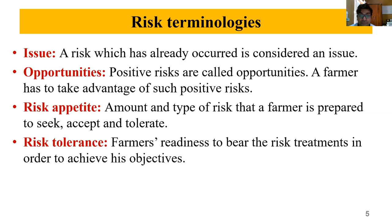Then 'risk tolerance': the farmer's readiness to bear the risk treatments in order to achieve his objectives. The farmer's objective is to have safe as well as high-income-oriented food products, and for that he has to go out of his comfort zone. So in risk terminology we have: issue (repetitive risks), opportunities (positive risks), risk appetite (capacity to seek, accept, tolerate), and risk tolerance (readiness to bear treatments to achieve objectives).